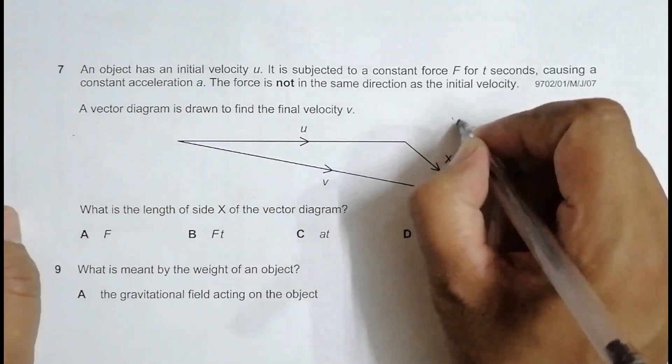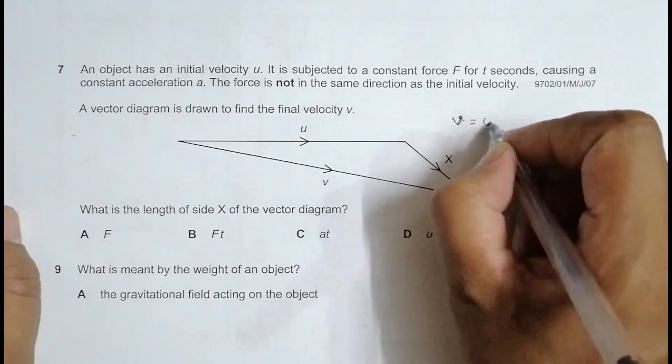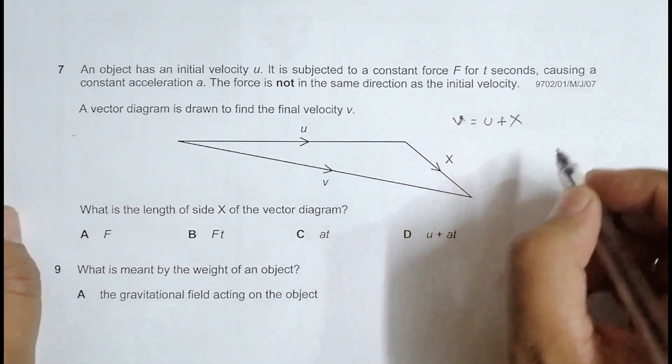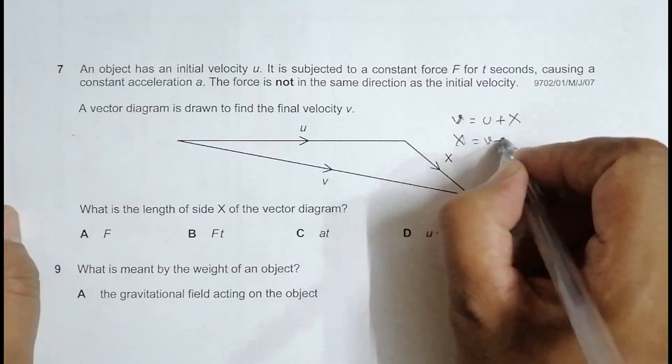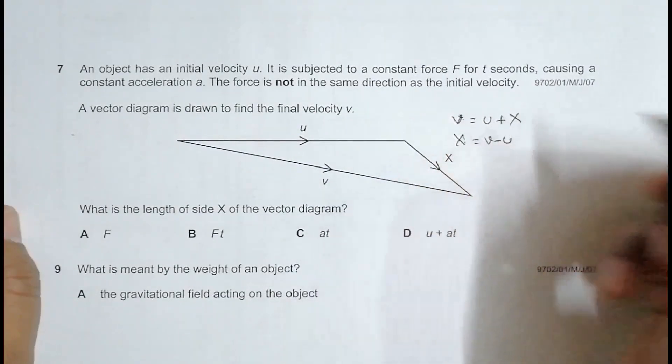So V is equal to the vector sum of U plus X, so that means that in this sense we must have this X should be equal to V minus U.